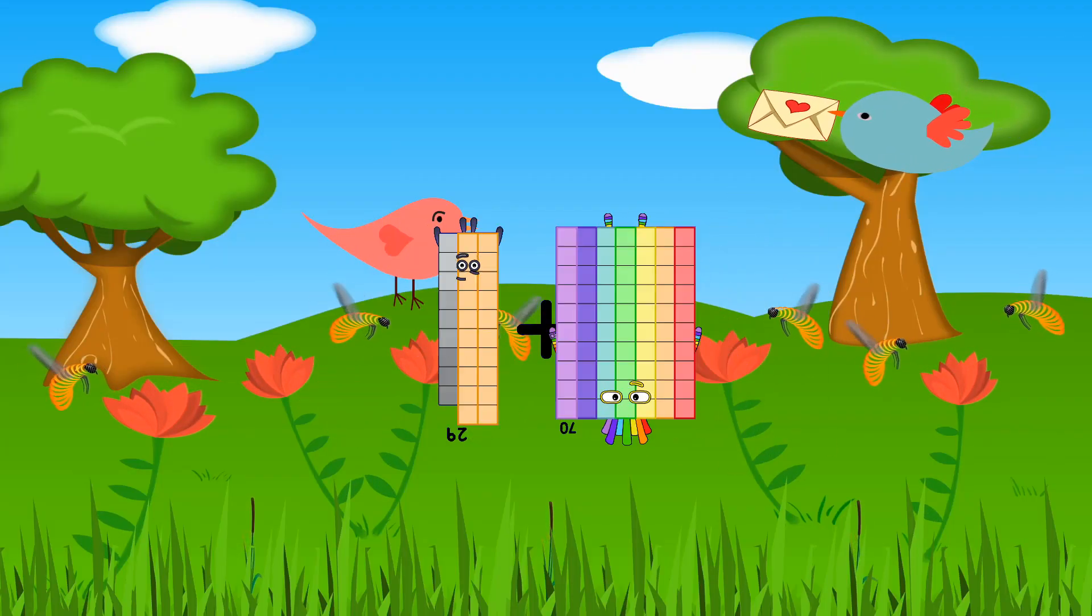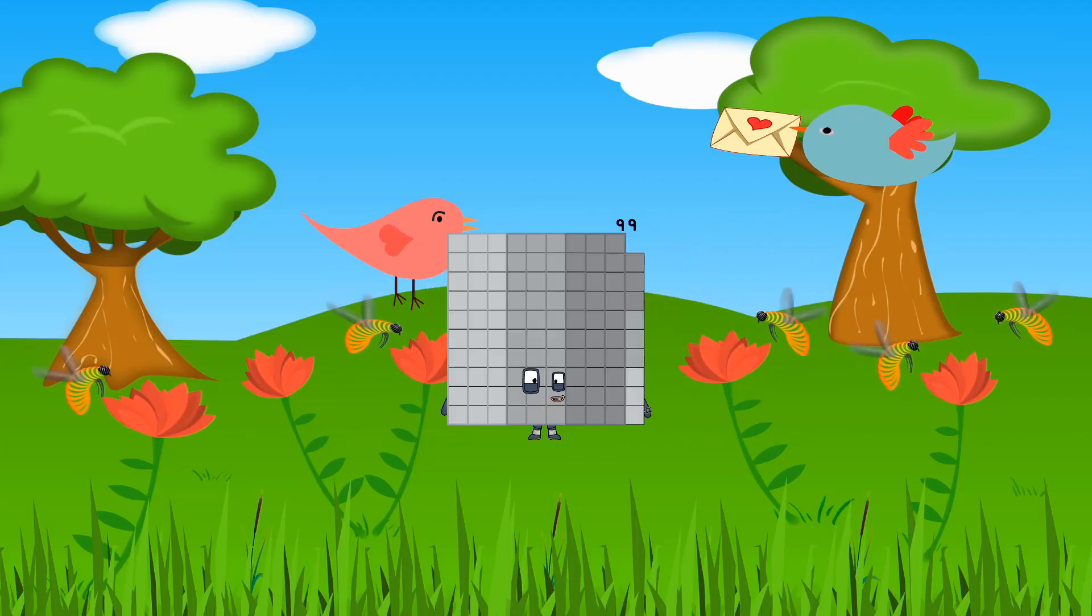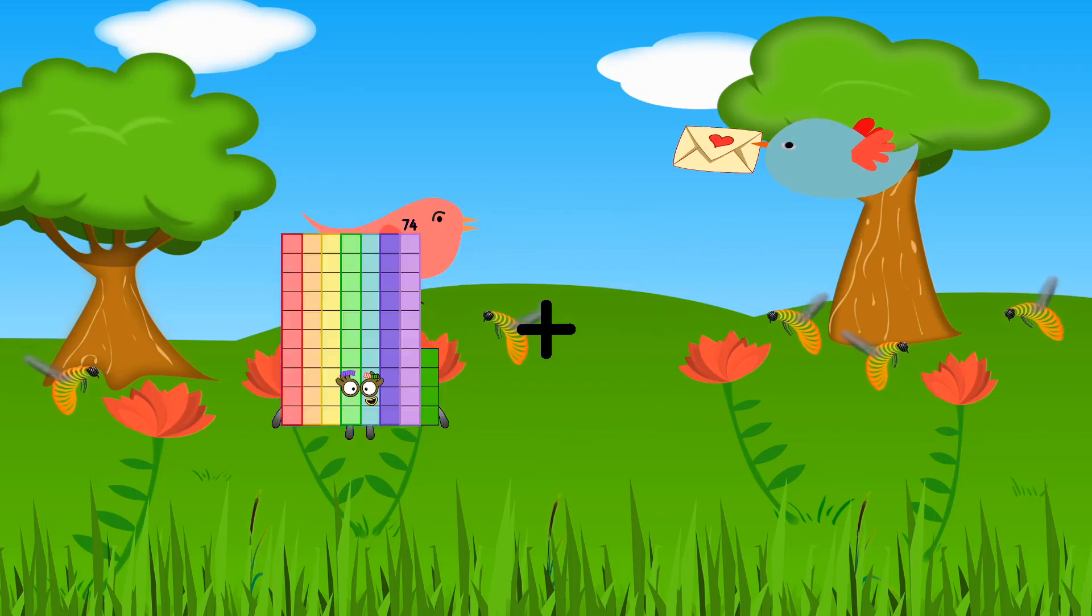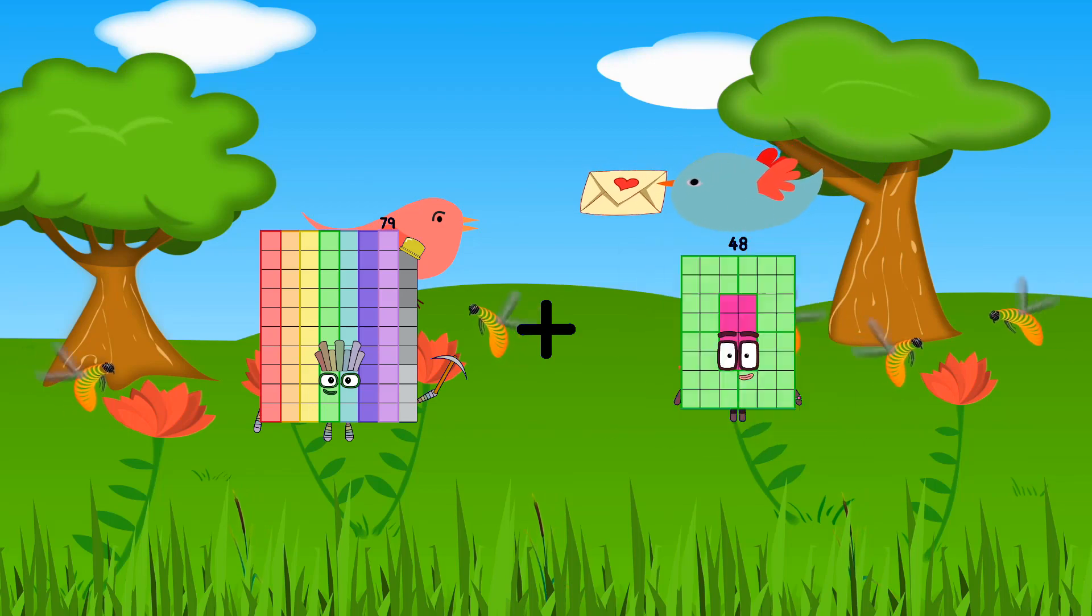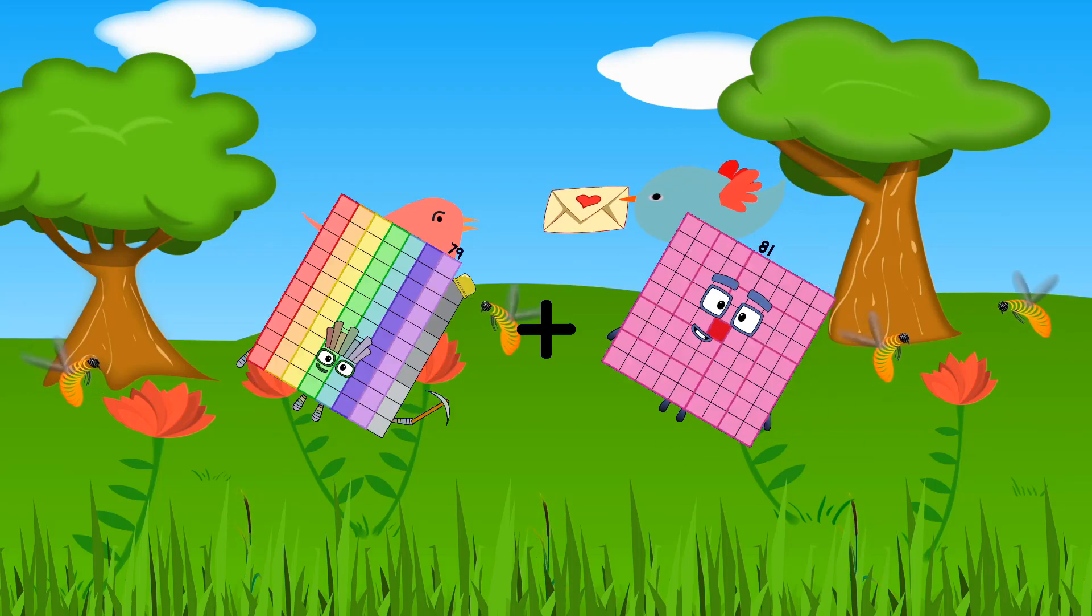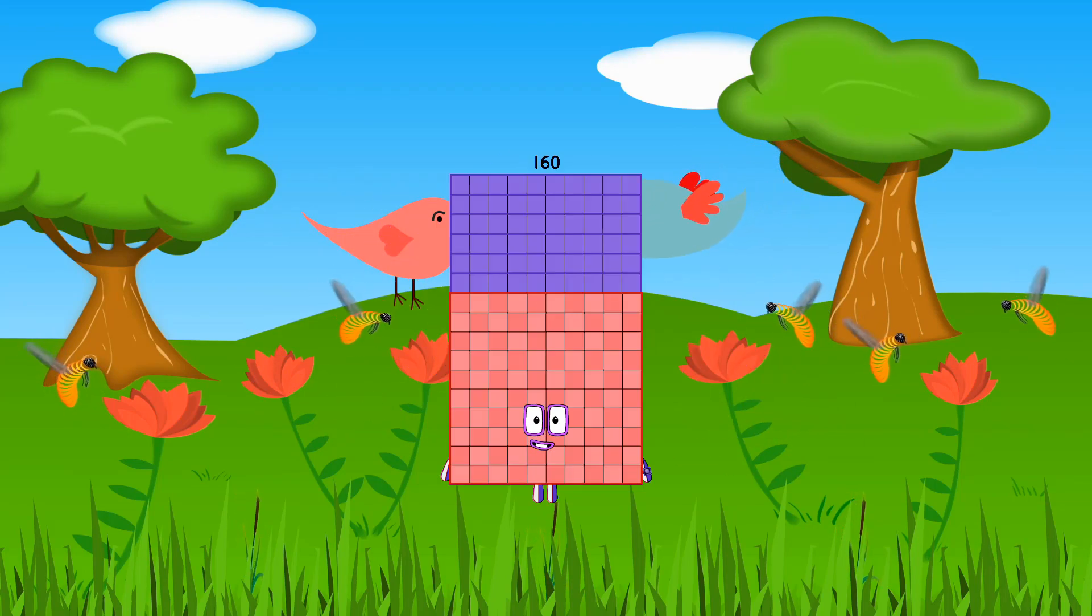29 plus 70 equals 99, 79 plus 81 equals 160.